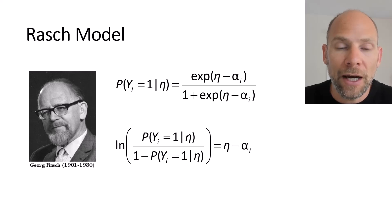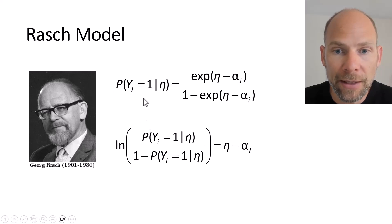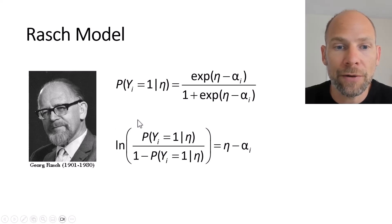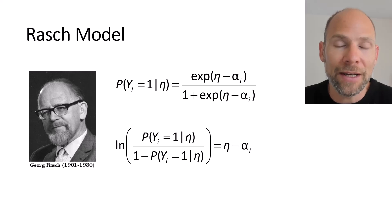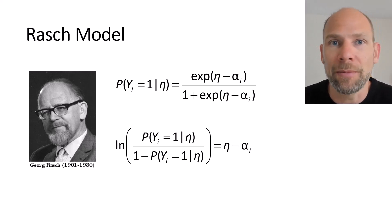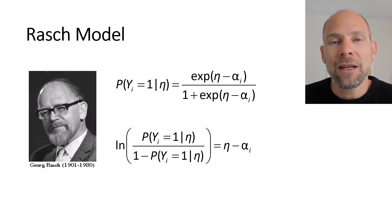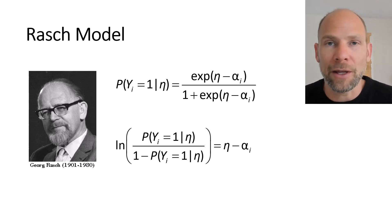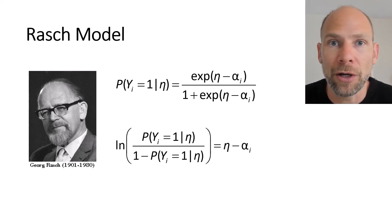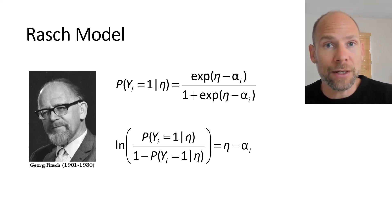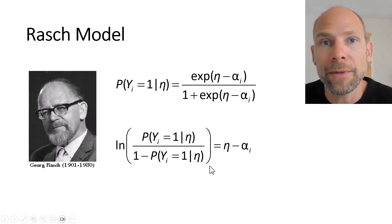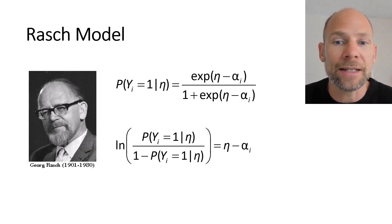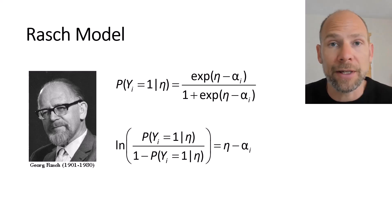When we express the Rasch model in terms of a logit, the right-hand side becomes a linear model again. So this model is linear in the logits but non-linear in the probabilities, which makes more sense because probabilities are more intuitive than logits. Typically we depict item characteristic curves in terms of probabilities, but we can also express the model in terms of logits — hence it is called a one-parameter logistic model, since each item only has one difficulty parameter alpha_i.